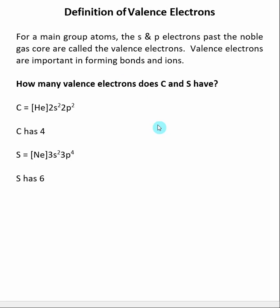When you look at the electron configuration of main group atoms it's not that hard to count the number of valence electrons.